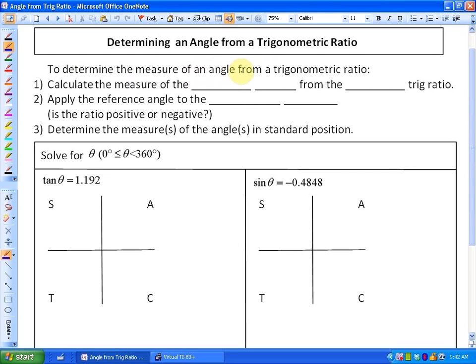To determine the measure of an angle from a trigonometric ratio, first of all what we're going to do is calculate the measure of the reference angle from the positive trig ratio.